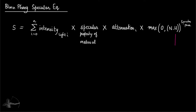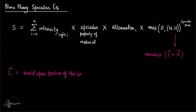So h is the half-way vector which is vector l plus vector v, normalized. Vector l is the world space position of the brightest light — or more generally, the world space position of the light. Vector v is the world space view direction.